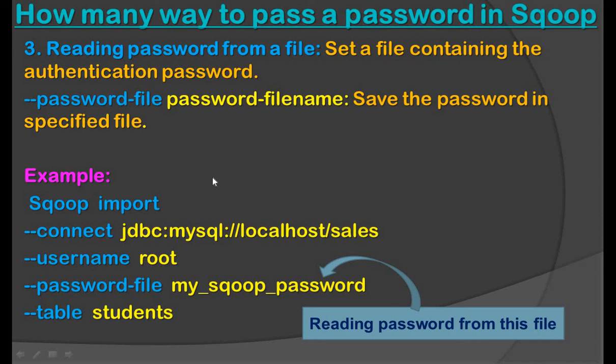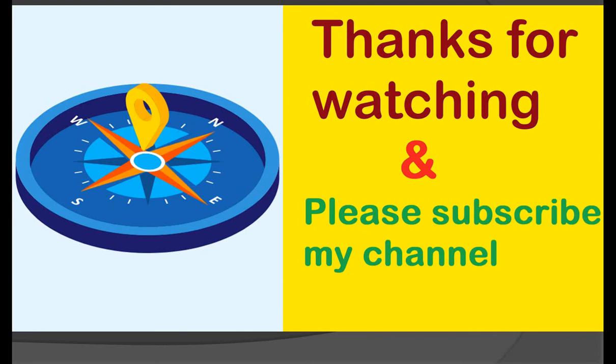In today's session we have seen how to pass a password in Scoop in three ways: first, using `--username` and `--password`; second, using `-P`, which prompts for a password that is invisible on the console; and third, using `--password-file` where we specify the path to a file containing the password. Thanks for sharing your time with me.